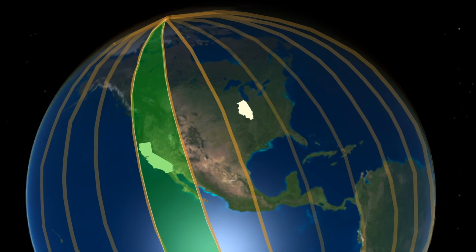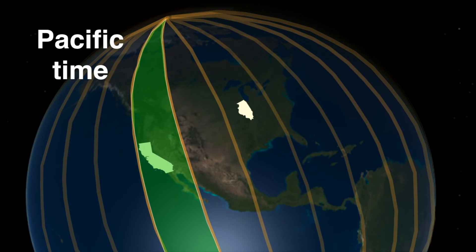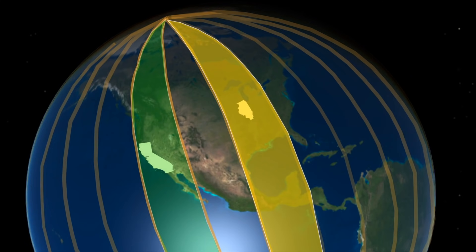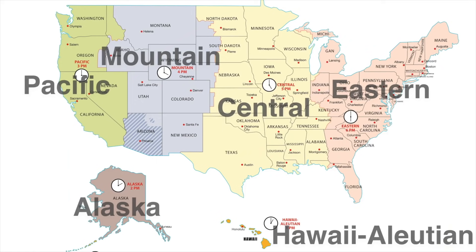People have actually given each time zone its own name — you might have heard of these. I live in a time zone of North America called Pacific time, and my grandparents' time zone is called Central time. Do you know what time zone you live in? If you live in the United States, you can pause the video to look at this map and find out.